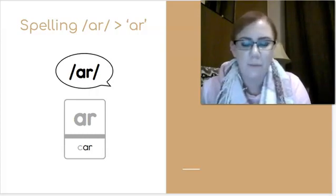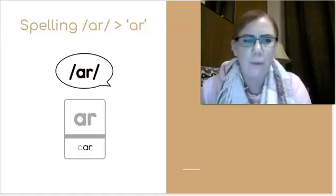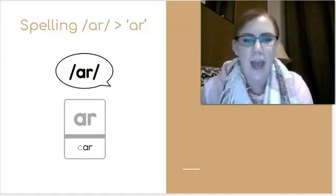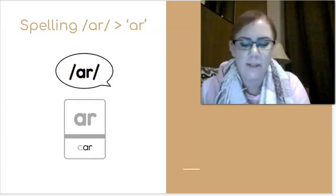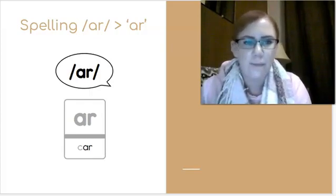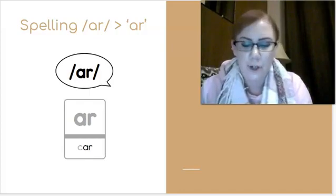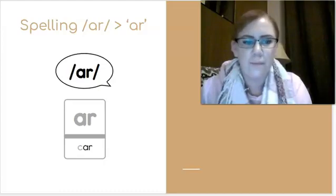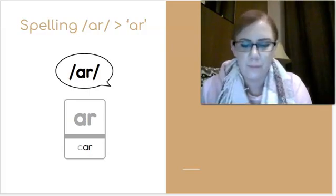Now let's practice some words that have R at the end. Now remember, when I say R, I'm talking about the A and the R together. Car, jar, bar, star, tar. Good.